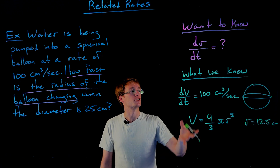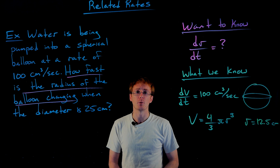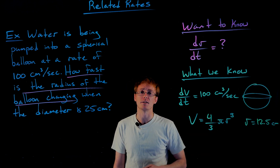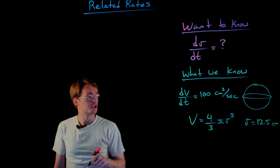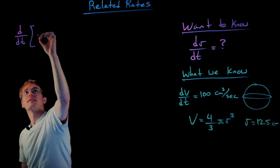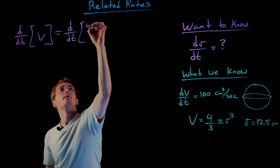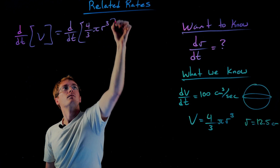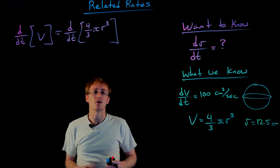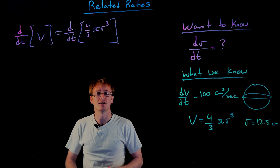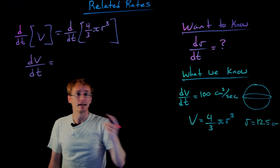We've gathered everything we want to know and what we already know, so now we're ready to find the equation that relates our rates together. We always find that equation by differentiating the equation relating the original quantities implicitly with respect to time. So let's differentiate V = (4/3)π r³ with respect to time. We're differentiating with respect to time, not with respect to volume or radius, so we must treat volume and radius as functions of time and use the chain rule or implicit differentiation. Differentiating the left-hand side gives dV/dt.